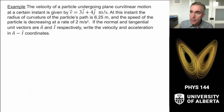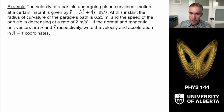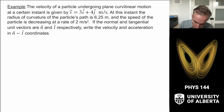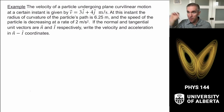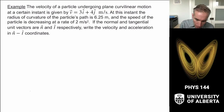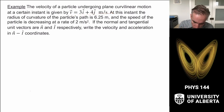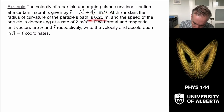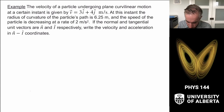Okay, so this gives us the mechanics we need to solve problems like this. Next, I give you a particle undergoing plane curvilinear motion — which just means it's moving on a curve in a two-dimensional plane. Its velocity vector is given as 3 i-hat plus 4 j-hat meters per second, and the radius of curvature is 6.25 meters.